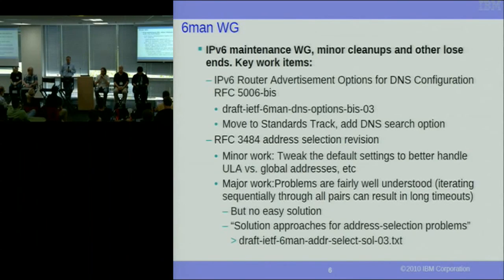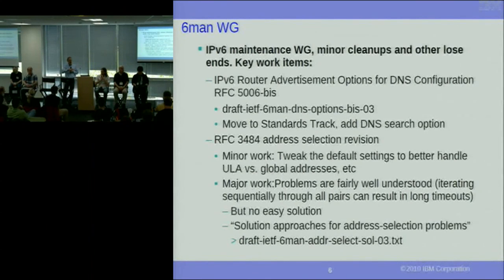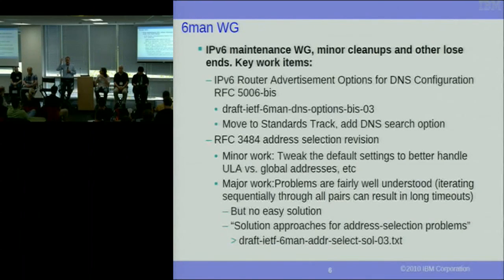A major open item is address selection, RFC 3484. A lot of the timeout problems people discussed are tied intimately with address selection — if you pick the right address, everything works beautifully, but it's very hard in all situations. There's clearly a revision needed for 3484 to clean up loose ends: deprecated site-local addresses, ULAs added in the meantime, and alignment with current documents. A longer-term question: do we need substantial changes? Apple, for instance, doesn't really do 3484 — they send out parallel queries.